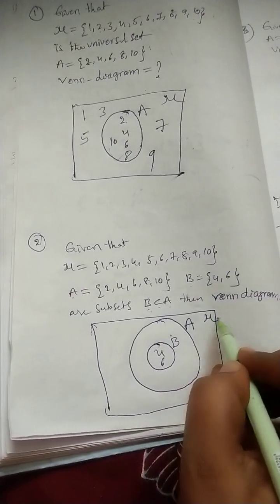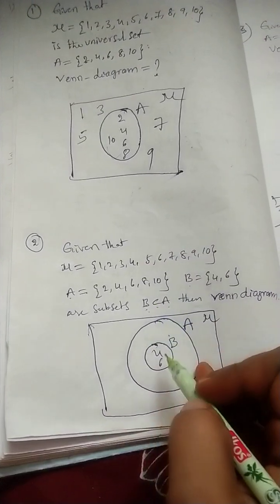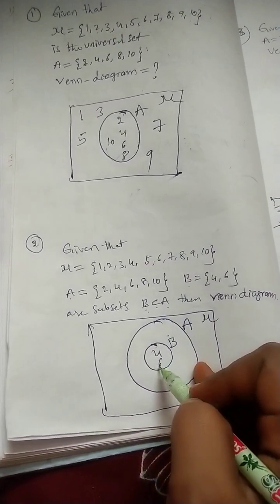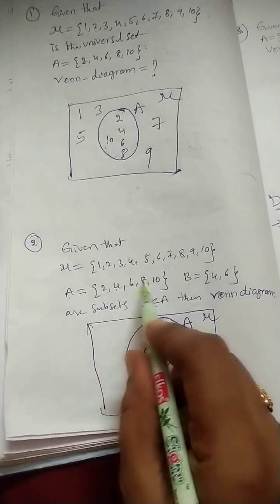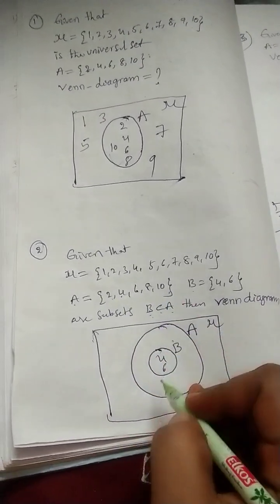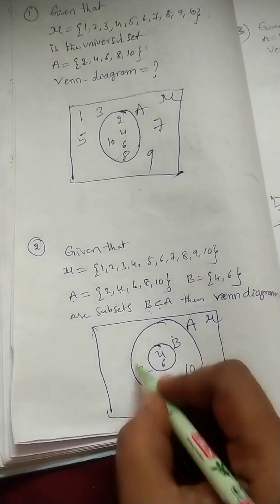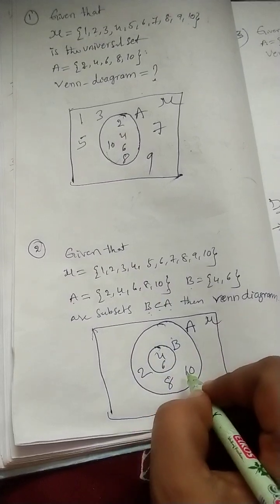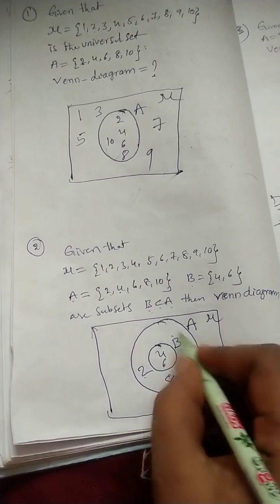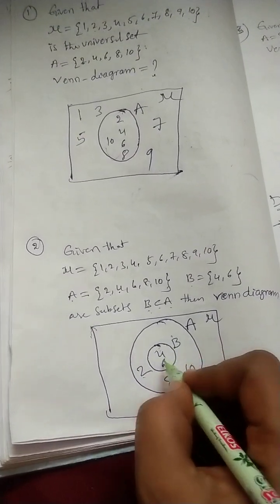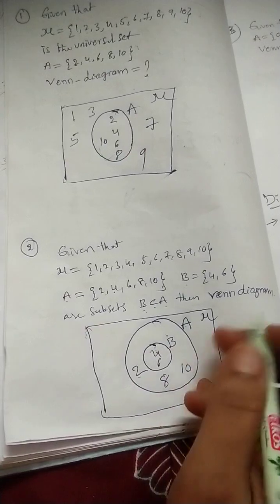So, first set B, take it 4 and 6 are there. Next, you should take set A. This rectangle is mu, universal set. In set A, already 4 and 6 is there in the set A. So, except 4 and 6, we can write 2, 8, 10 in set A. It will come under only set A.